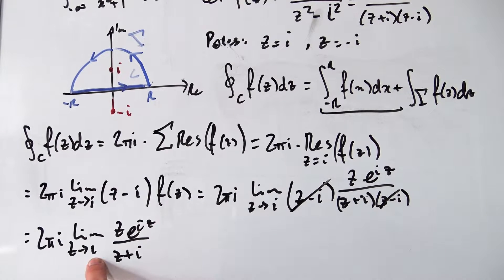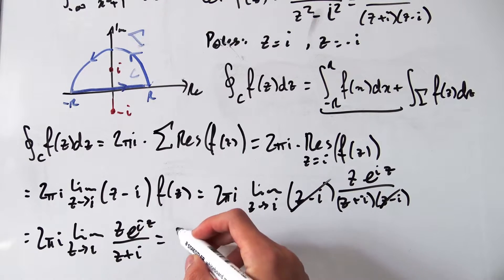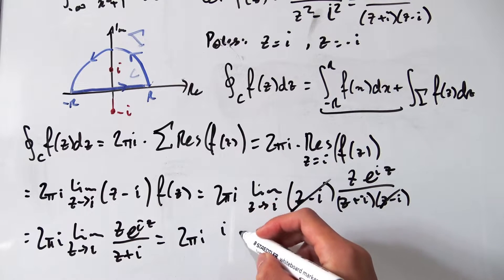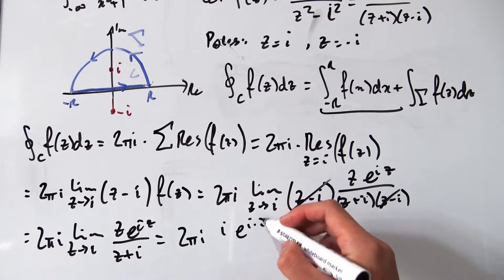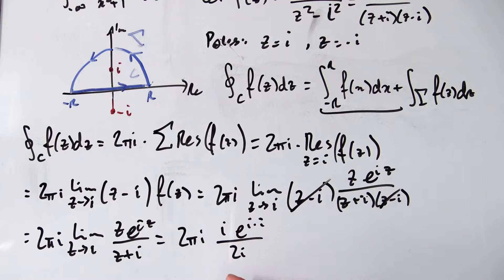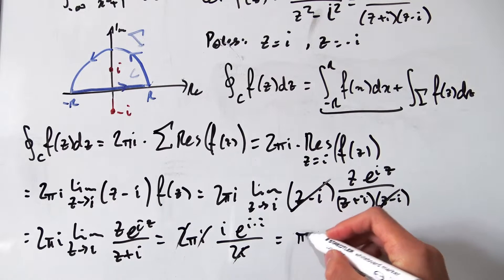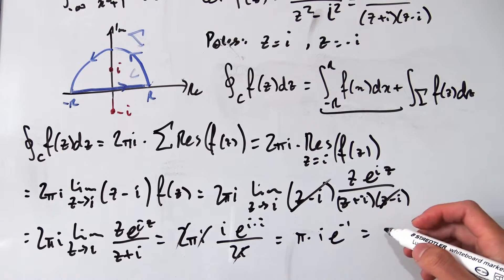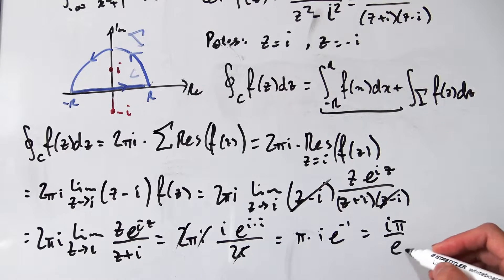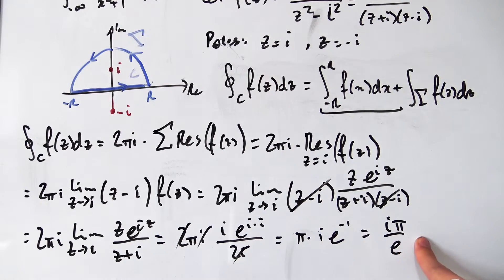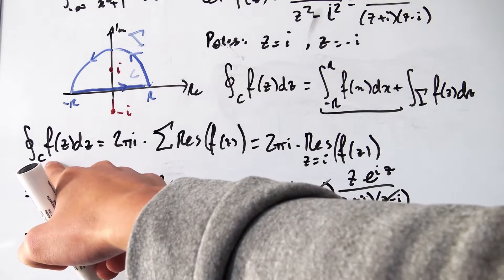Nothing blows up when we substitute z = i directly. Plugging in, we get 2πi times i·e^(i·i) / (i + i) = 2πi times i·e^(−1) / (2i). The 2i cancels, leaving π · i · e^(−1). So the contour integral equals iπ/e. That is the value of our contour integral over C.